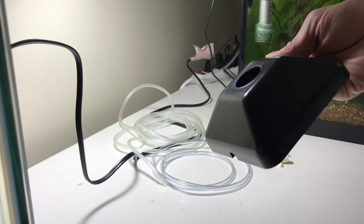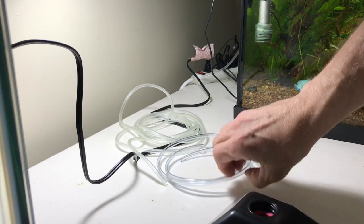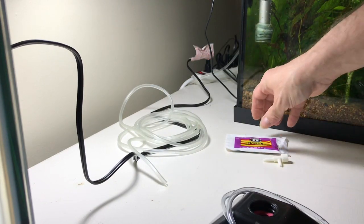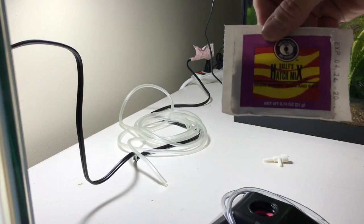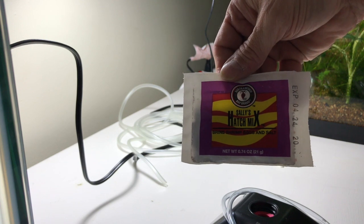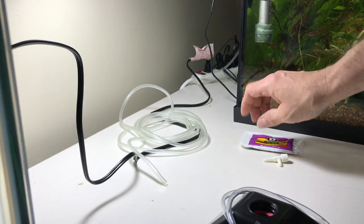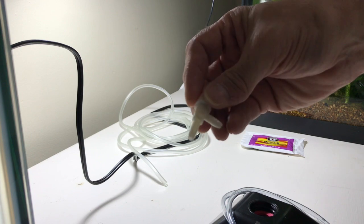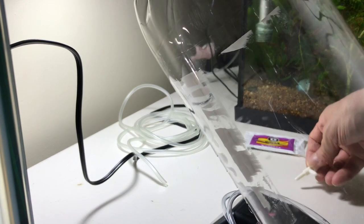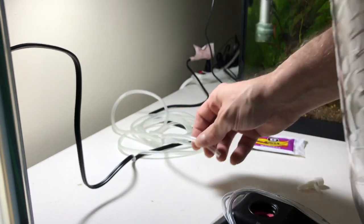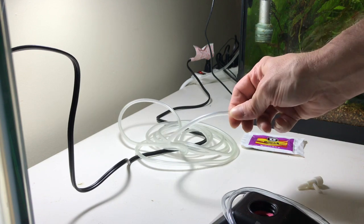They send you three of these hatch mixes, which is the eggs and the salt mixed together. You're also going to need a valve of some sort, a two-liter bottle emptied and clean, some extra airline, and an air pump.